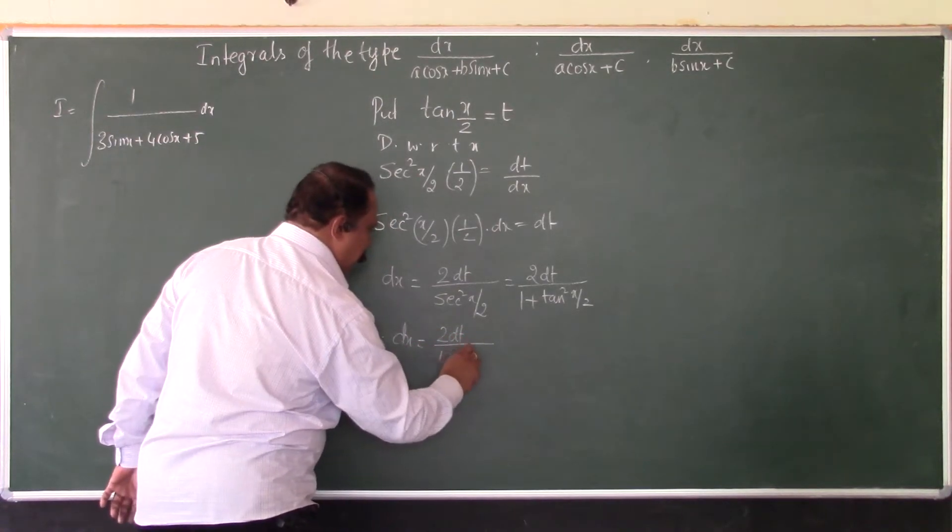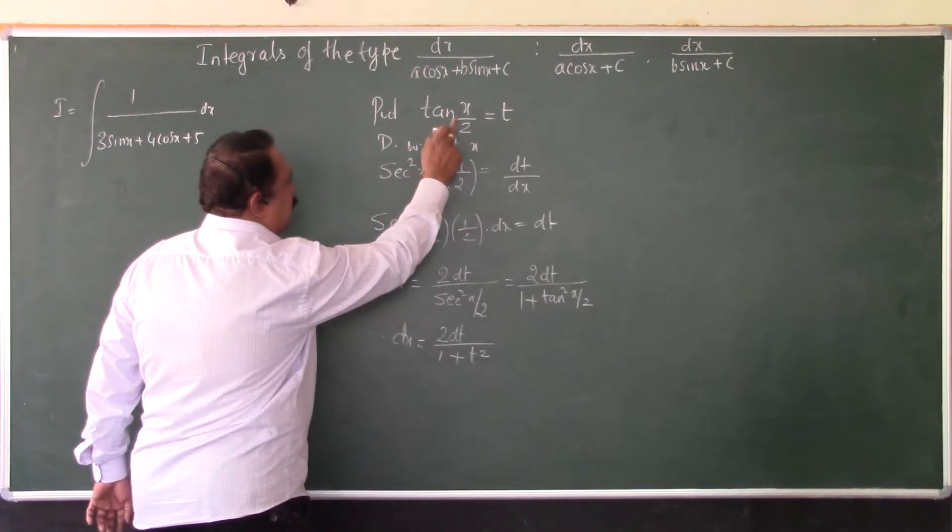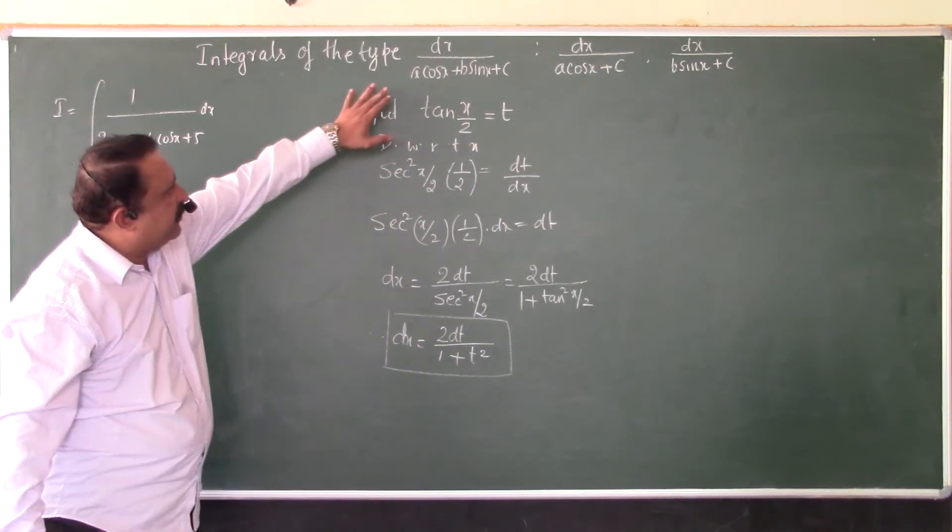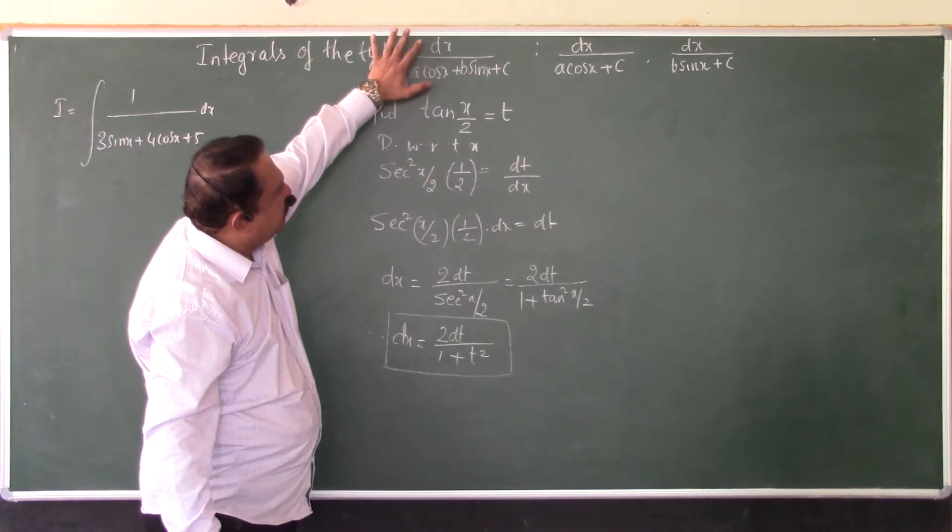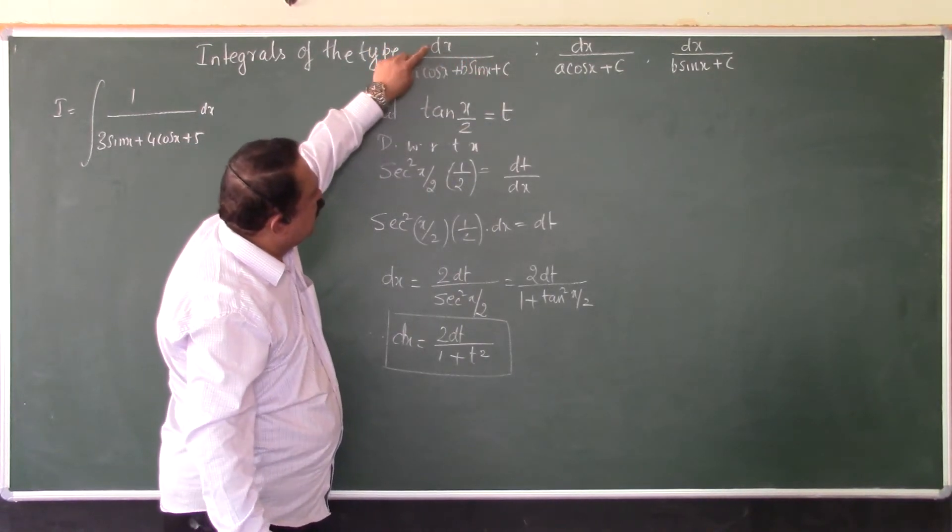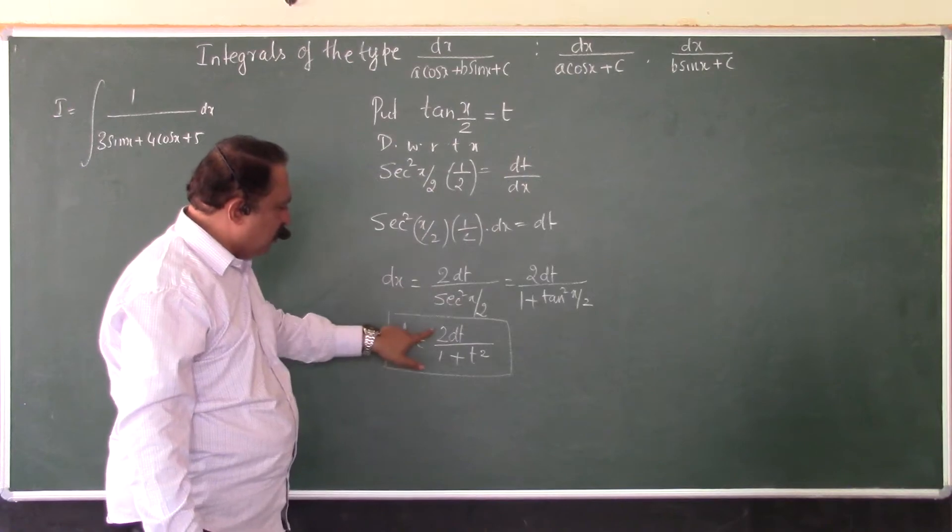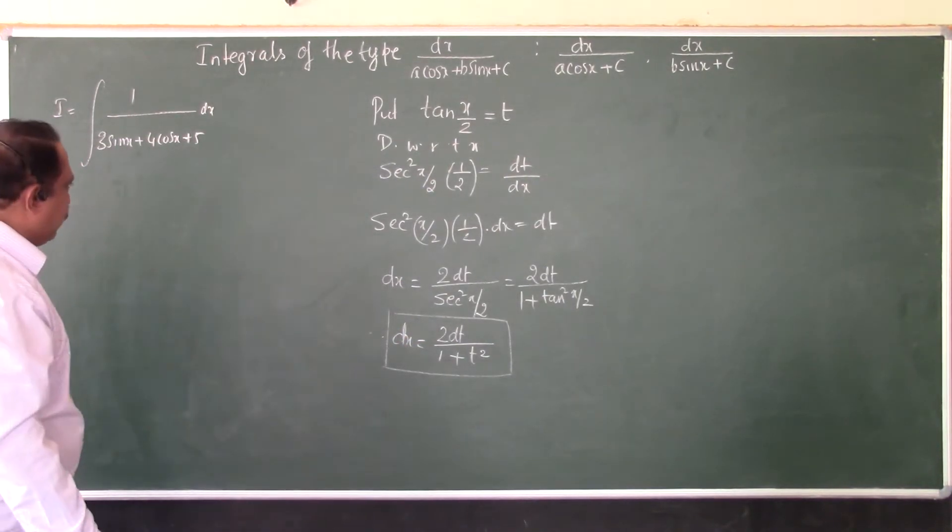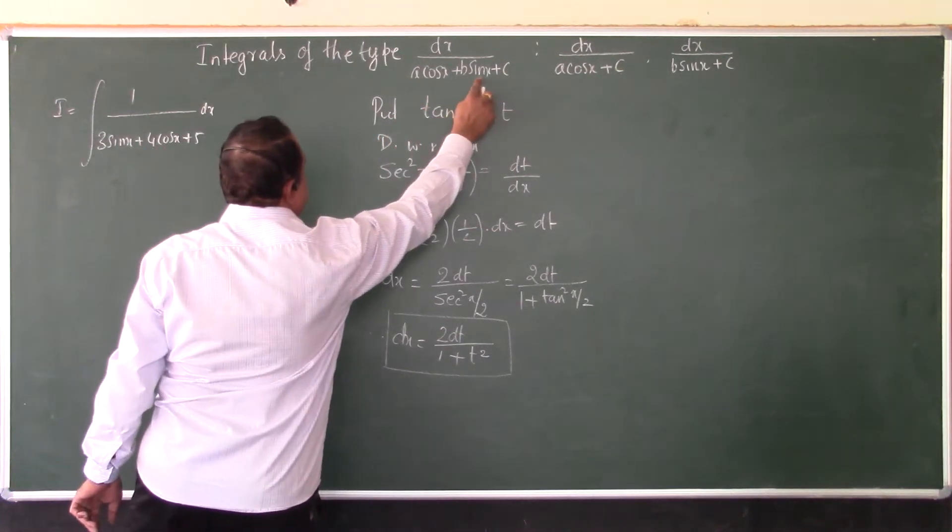So remember, in this type of integration of the type dx/(a cos x + b sin x + c), the numerator dx should always be replaced by 2dt/(1 + t²).